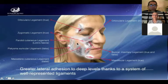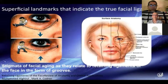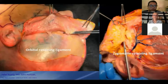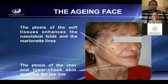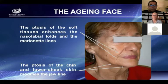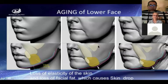It is very important to know that all the others are false ligaments, which we pass when we want to reposition the skin. Here you can see how the ligament relaxes and how the face shows proper stigmata of aging. You can see the orbital retained ligament, the zygomatic retained ligament on the cadaver, the buccal maxillary retained ligament, and the mandibular retained ligament. The aging leads to ptosis of the tissues that enhance the nasolabial fold and marionette lines, while ptosis of the chin and lower cheek skin modifies the jawline.